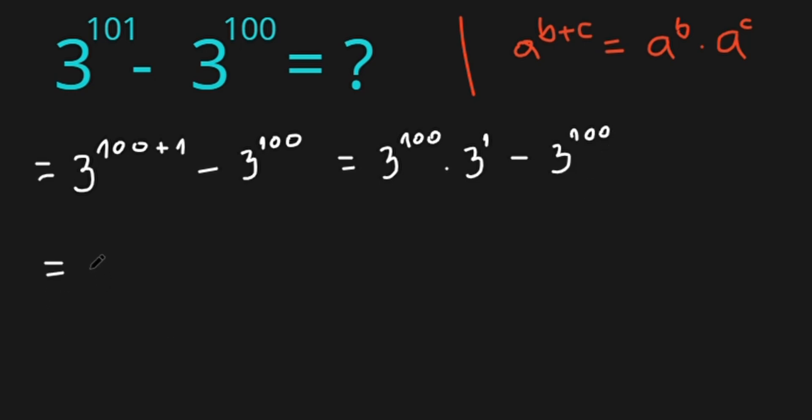Because these two terms have the same factor, 3 to the power of 100, we can take it out. So we have 3 to the power of 100 times brackets, what's left is 3 minus 1.